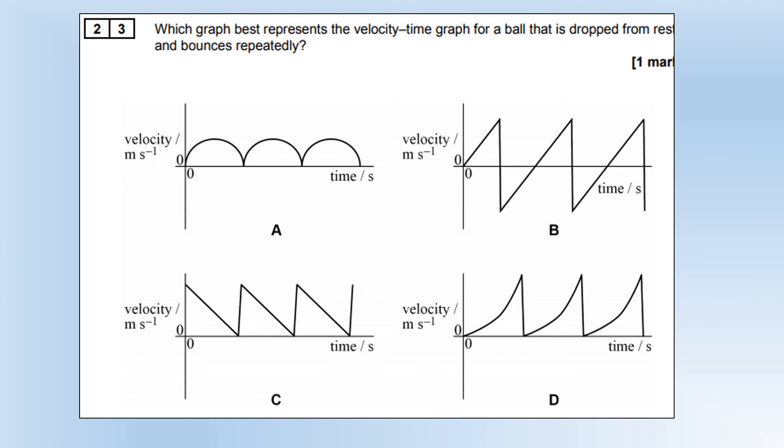Which graph best represents a velocity time graph for a ball that's dropped from rest and bounces? If it's bouncing, it's going to be changing direction, which means its velocity should be both positive and negative. The only one that fits that is B.